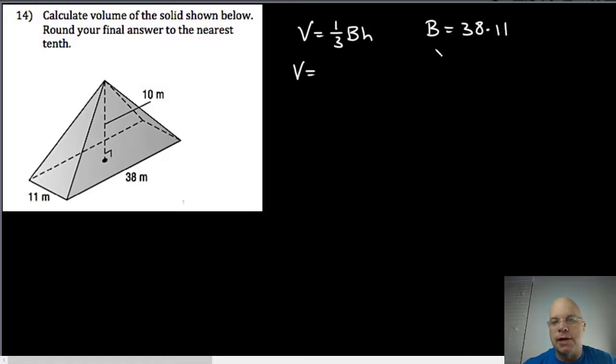Base multiplied by height, or 38 times 11—that's 380 and 38, which is 418. So one-third multiplied by the area of the base, which we just determined is 418, multiplied by the perpendicular distance from the vertex to the base, which is 10.